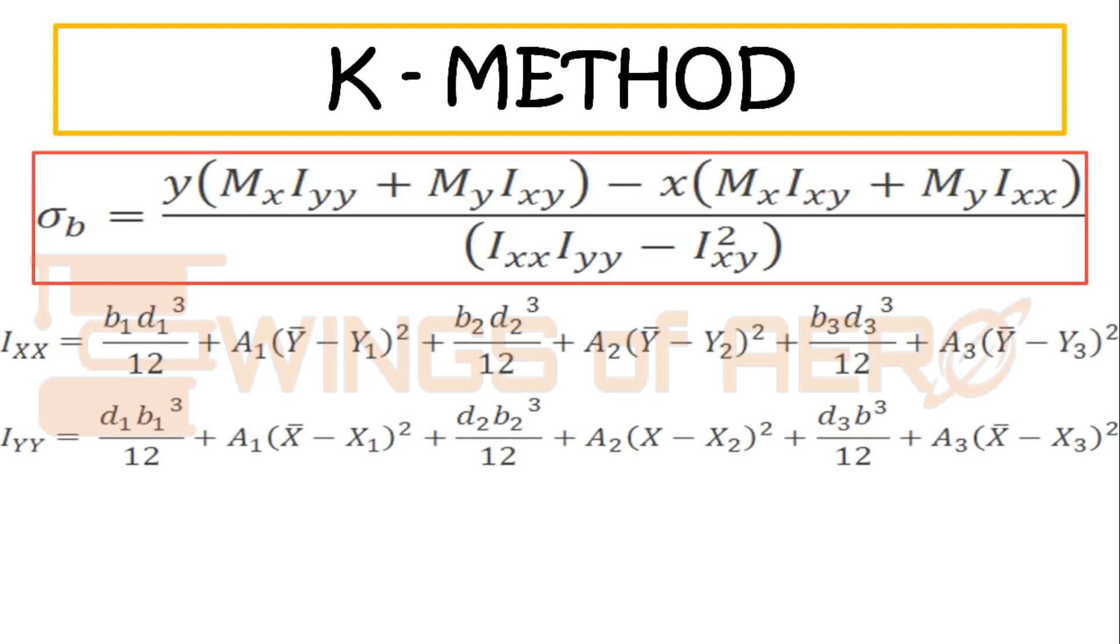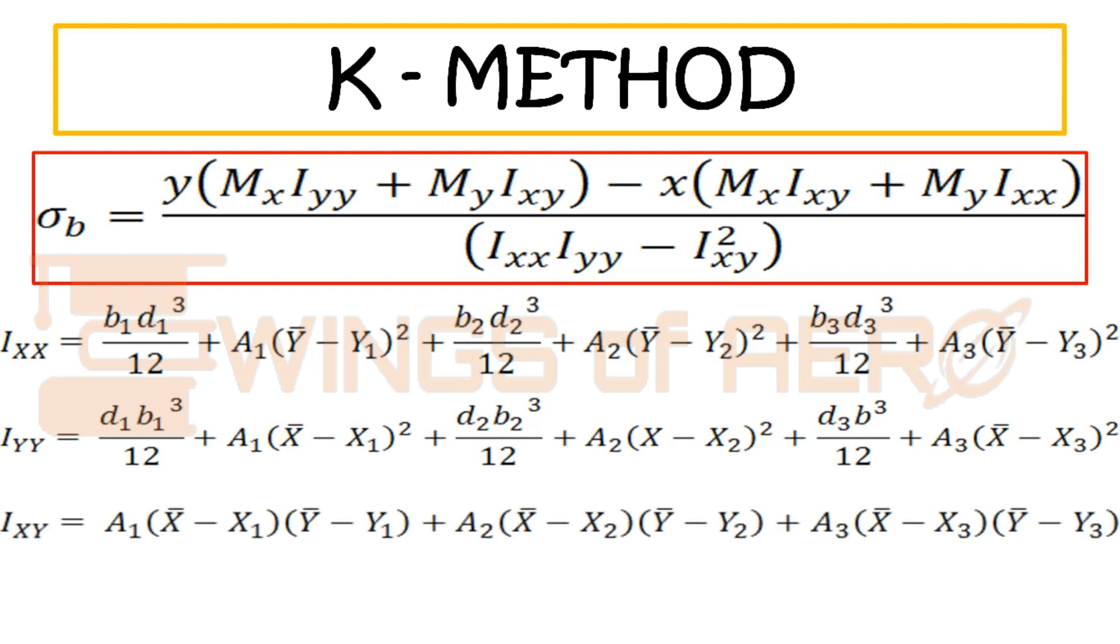Here comes the K method formula. Sigma b equals y times (Mx Iyy plus My Ixy) minus x times (Mx Ixy plus My Ixx) divided by (Ixx Iyy minus Ixy squared). Now, if the section has three elements or three nodes, we can write the formula of Ixx and Iyy like this as displayed on your screen. And Ixy can also be written like this.